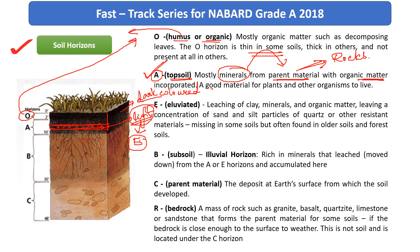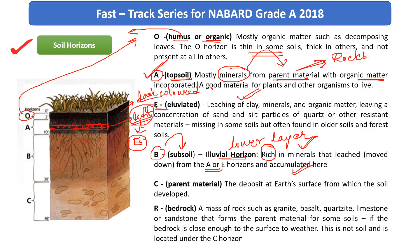Moving on to the B layer, it is also known as subsoil. As we saw previously, it is also known as the illuvial horizon. It is obviously rich in minerals because after the washing out process, whatever minerals come from the A or E horizon reach this layer. So minerals that are leached from A or E are accumulated here in the B horizon.